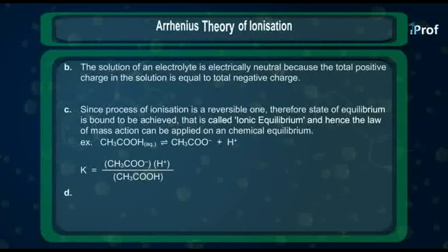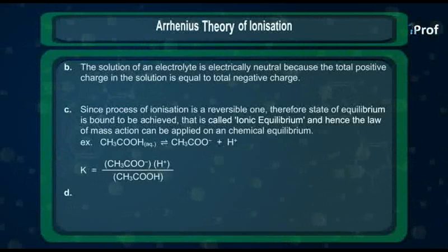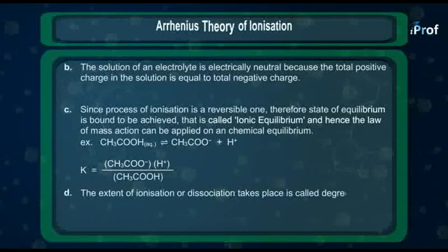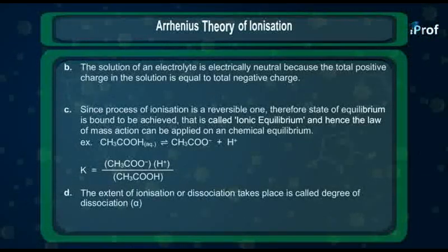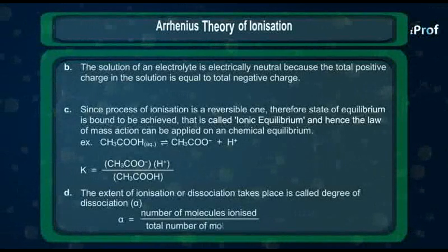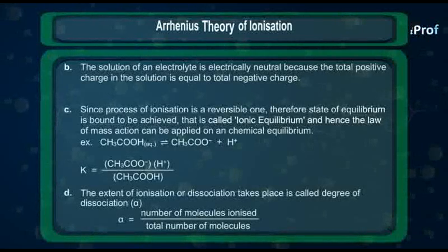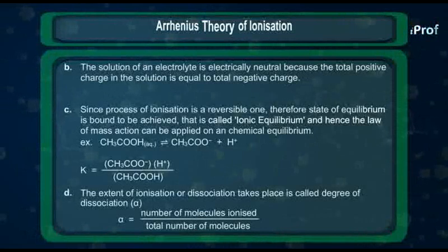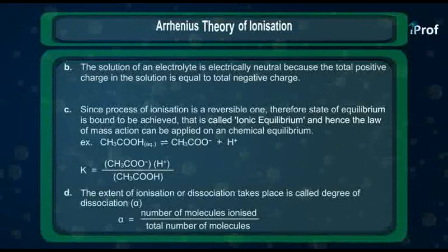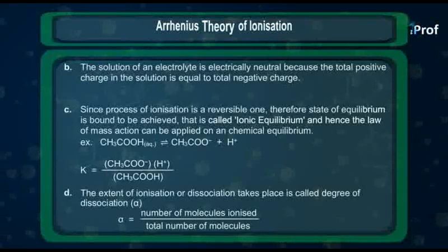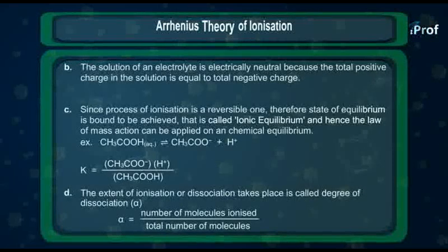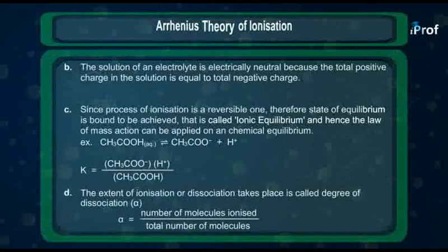The fourth point: the whole of the electrolyte does not undergo complete ionization. Therefore, the extent of ionization is called the degree of ionization or degree of dissociation, alpha. Alpha equals the number of molecules ionized divided by the total number of molecules of the electrolyte in the solution. The value of alpha is almost equal to unity for strong electrolytes — those substances which are considered to be almost completely ionized under all conditions — including strong acids, strong bases, and almost all types of salts.